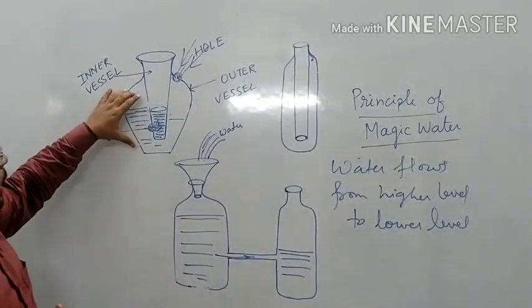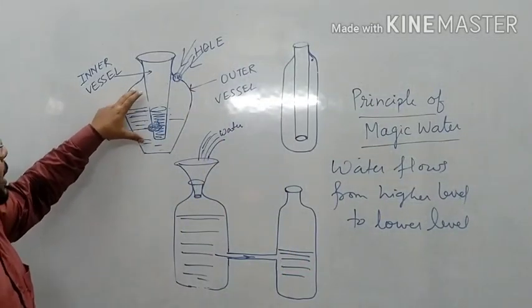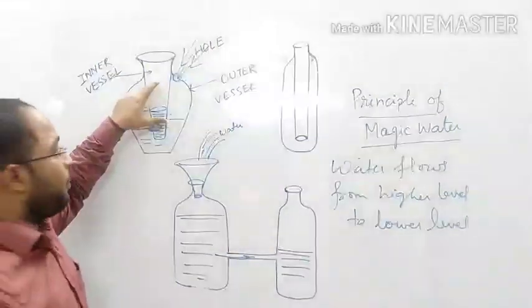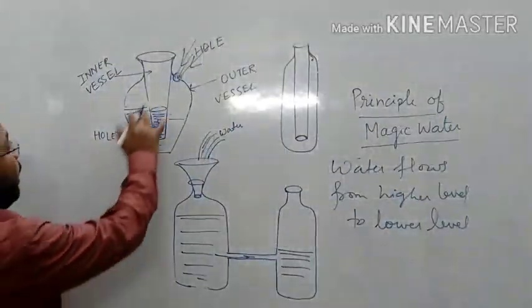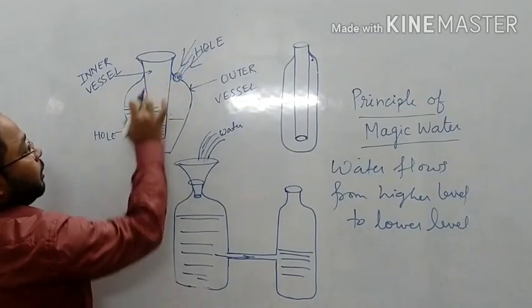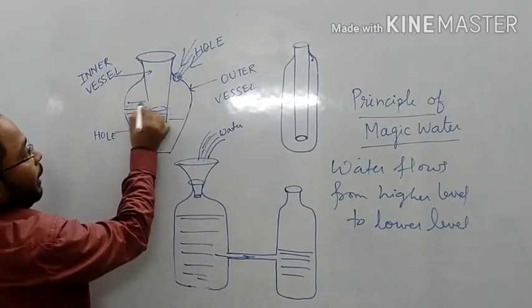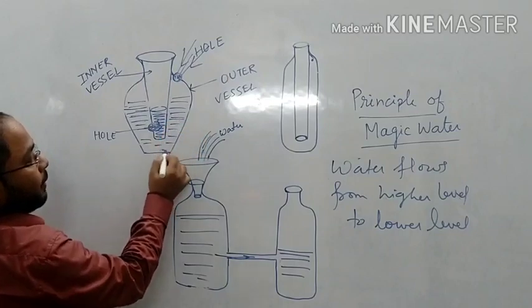If I take a vessel like this, it is having an outer vessel, it is also having an inner vessel. So when I am pouring water over here, water will accumulate over here. Water is coming to this vessel first.